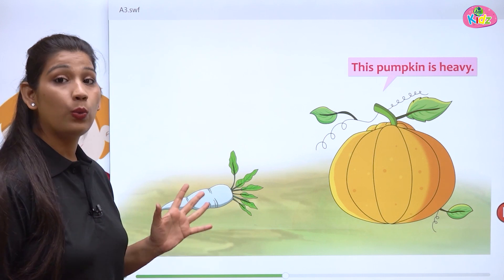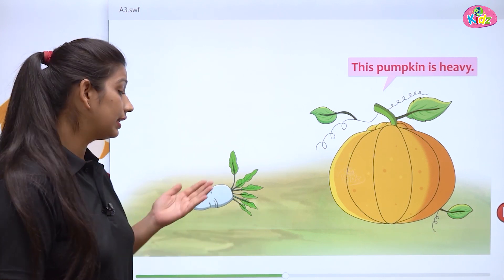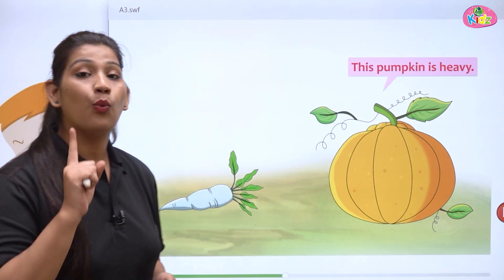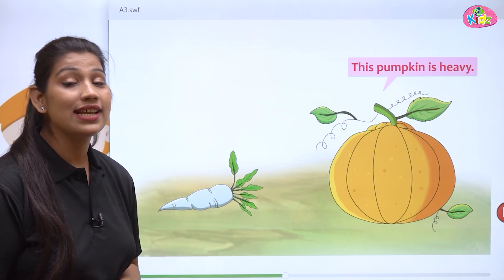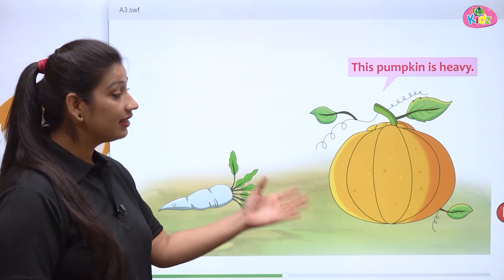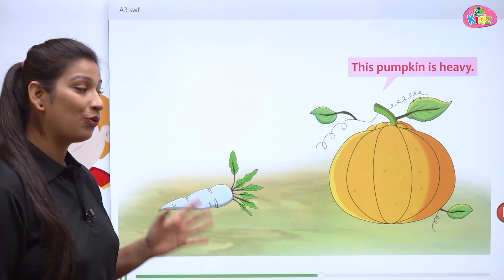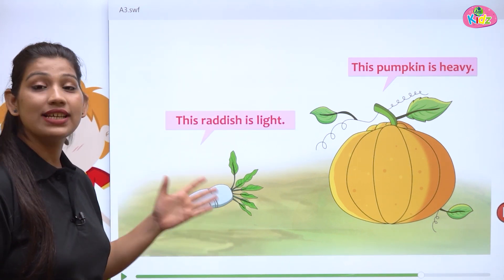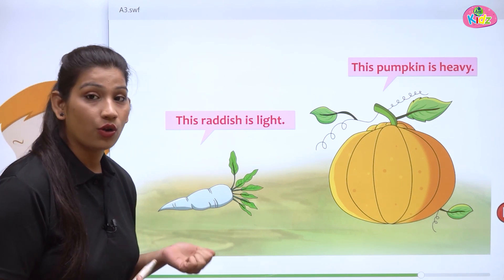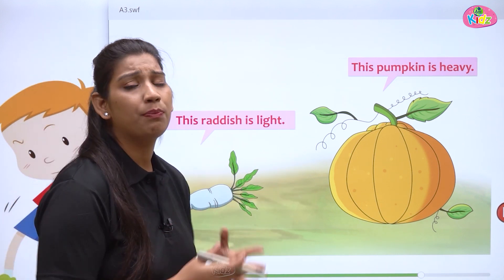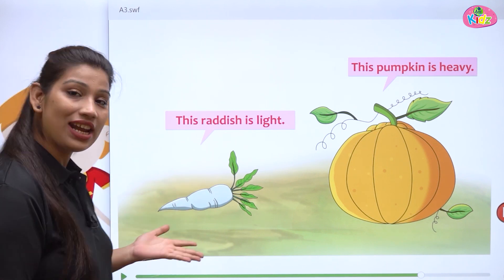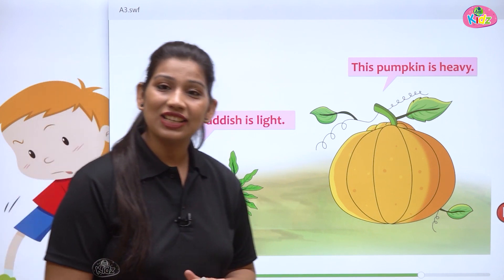Here students, you can see two vegetables. This is a radish and this is a pumpkin — yeh reddish hai aur yeh pumpkin hai. One of them is heavy and the other is light. The pumpkin is heavy, bhaari hai. The radish is light, halki hai. You cannot easily lift the pumpkin, but you can easily carry a radish because it is light.